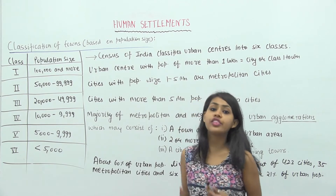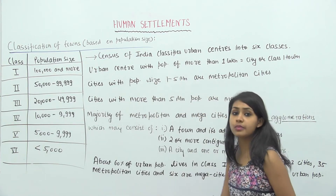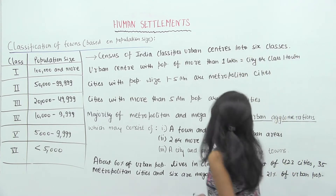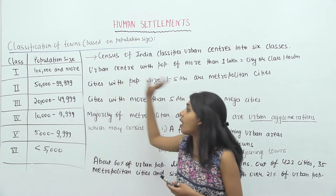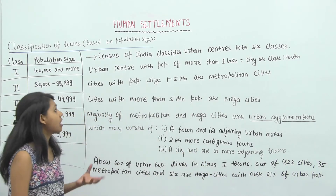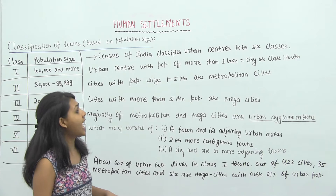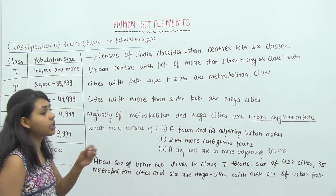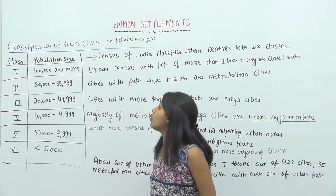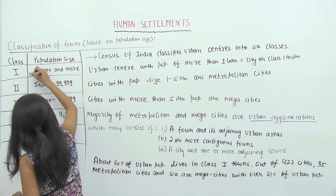There are a few things we should remember about this classification. This table has been given to us by the Census of India. The Census of India classifies urban centers into 6 classes. An urban center with a population of more than 1,00,000 is called a city, or a Class 1 town.